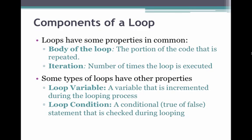All loops share some things in common. There's the body of the loop, which is the portion of the code that is repeated while the loop is active. And each time you go through the body of the loop, that's called an iteration. So the number of iterations is the number of times the loop is executed.